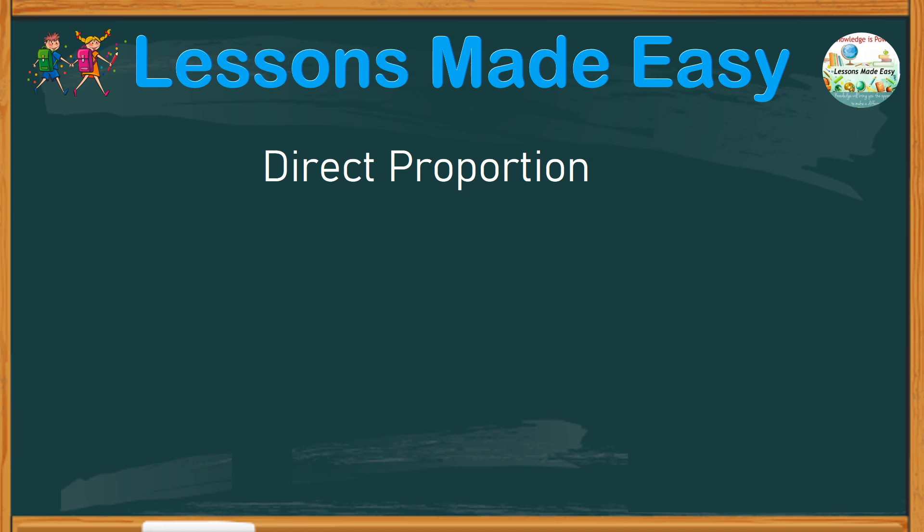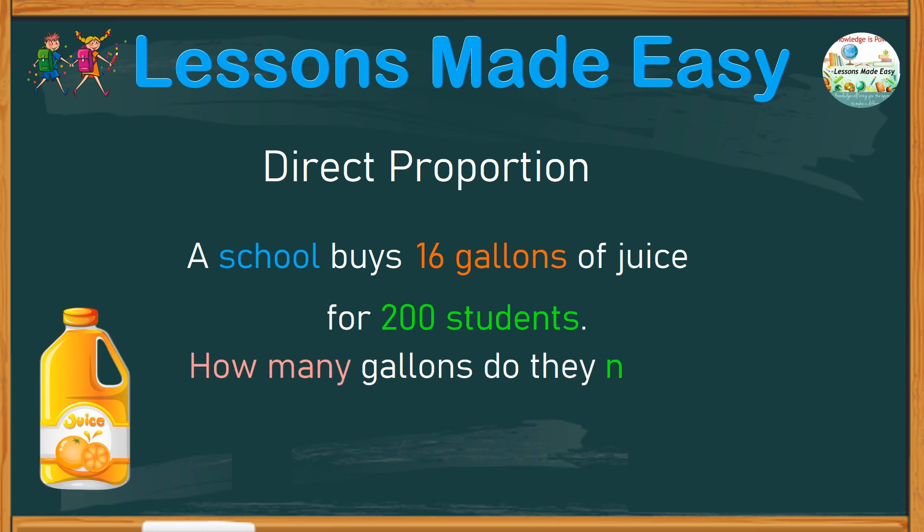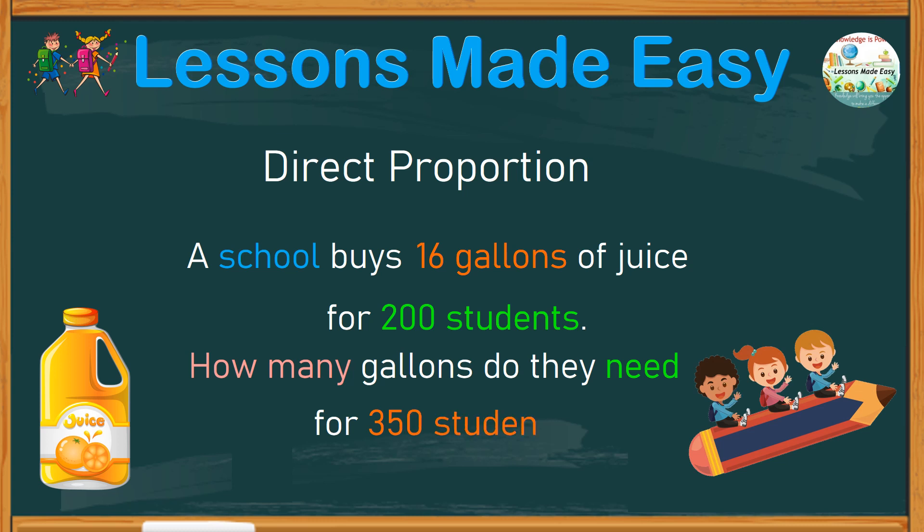Here is the first one. A school buys 16 gallons of juice for 200 students. How many gallons do they need for 350 students?